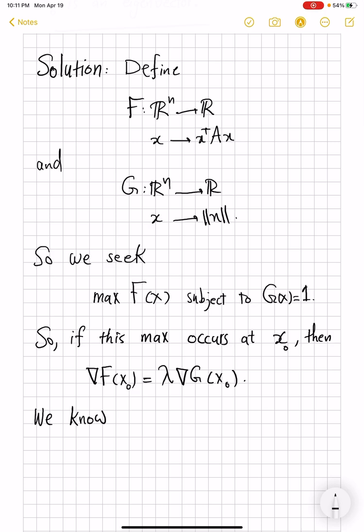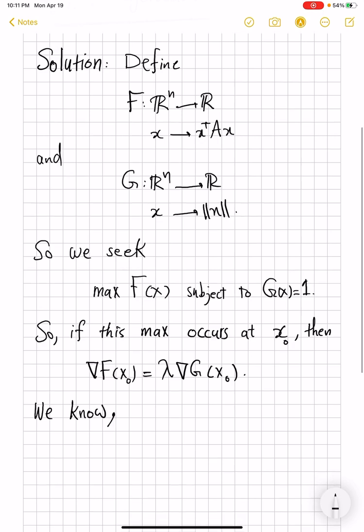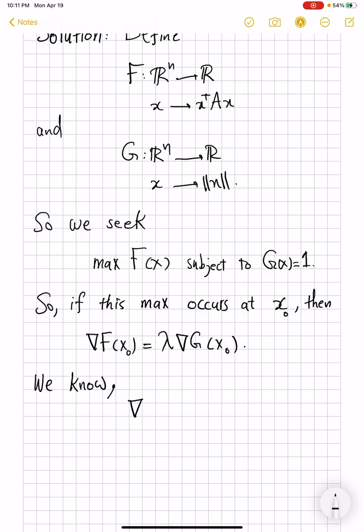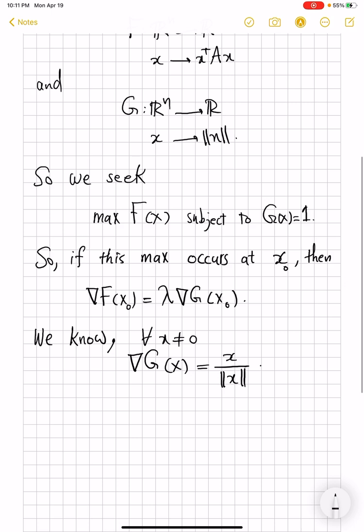By the way, I do not prove here that at least one maximizer occurs. That's an easy exercise, which I leave to you. Please put in the comments if you know why a maximizer does exist. What I want to show you, though, is the gradient of F. Gradient of G at every x other than 0 is given by x divided by absolute value of x.